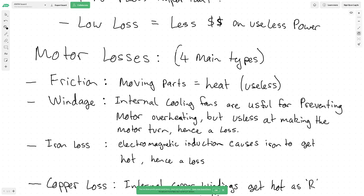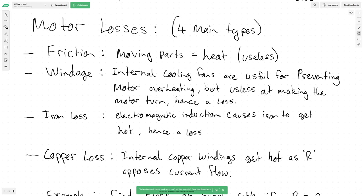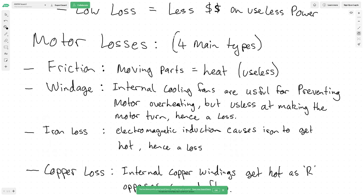Now we'll move on to motor losses. There are four main types of motor power losses. The first is friction: there are moving parts within a motor, and this causes heat through friction. That heat is useless — it doesn't contribute to spinning anything or give us any useful output.